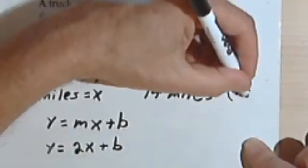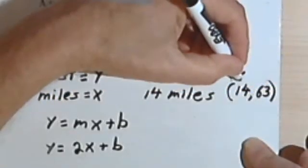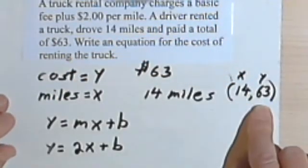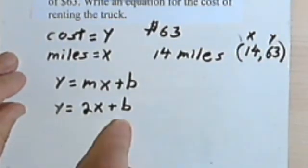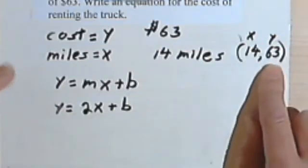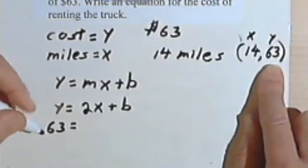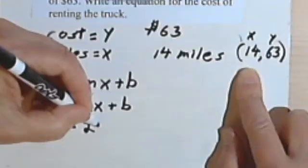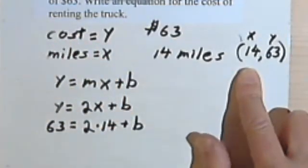So let's take the X and the Y and plug them into this partial equation that we have done and figure out what the B is. Okay, so Y is 63. 63 equals 2 and X is 14. 2 times 14 plus B.